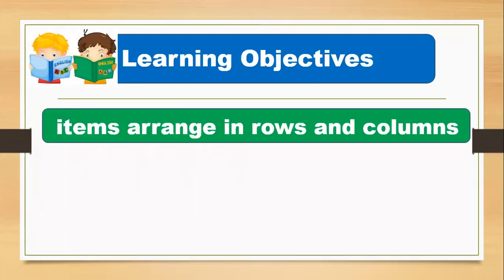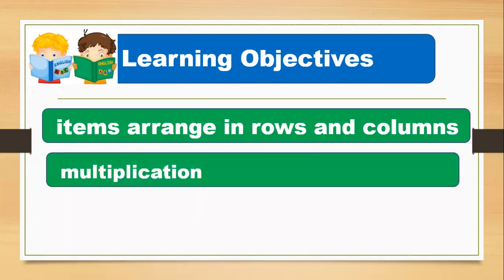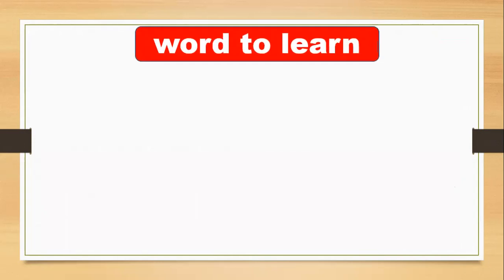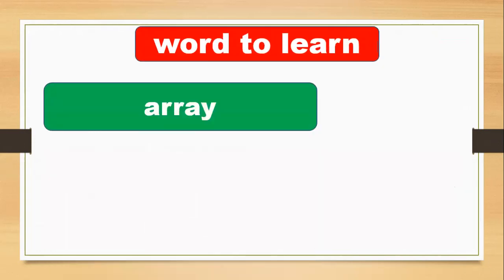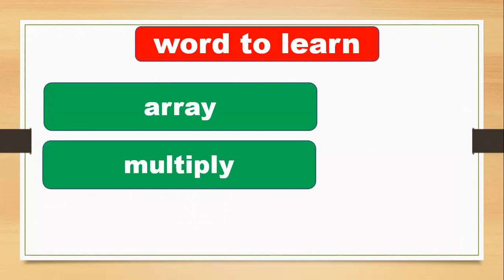In this lesson we learn about how to arrange items in rows and columns. We will see different items arranged in rows and in columns, and you will also learn about the multiplication sign — how we can quickly multiply numbers in rows and columns.